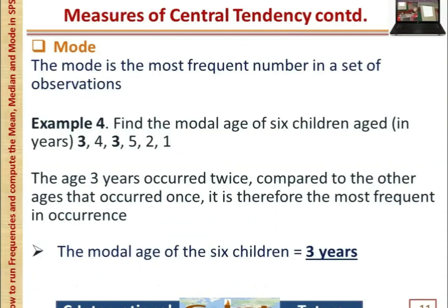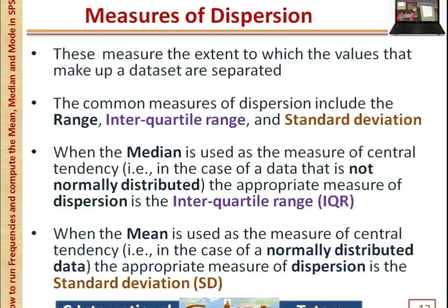The mode is the most frequent number in a data set. For example, to find the mode of the ages of six children with the ages shown: the age three years occurred twice, compared to the other ages that occurred once. It is therefore the most frequently occurring value, and so the mode age of the six children equals three years.